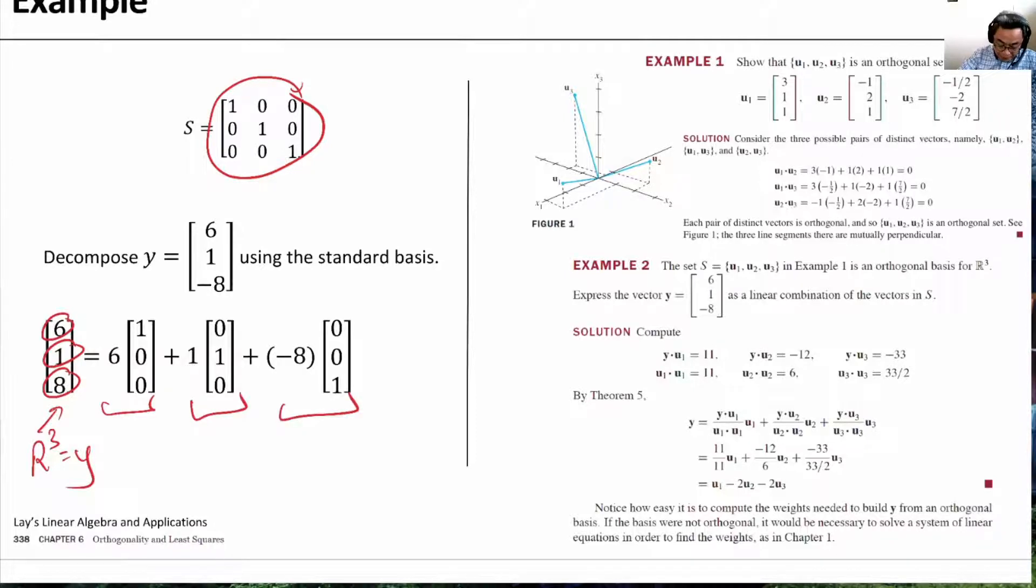And because the three parts are spanned by an orthogonal basis, and these are the standard basis that we all know, it is very easy to show that 6, for example, this is the first axis, and let's say this is the origin, this is 6. And in the second axis, let's say this is X2, we need 1. And in the third axis, we need minus 8.